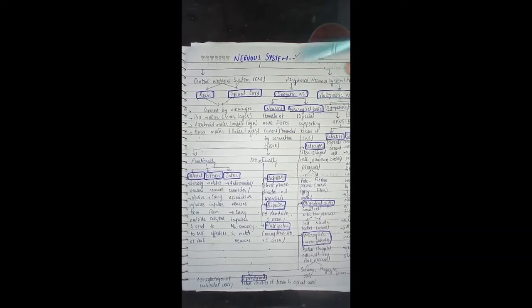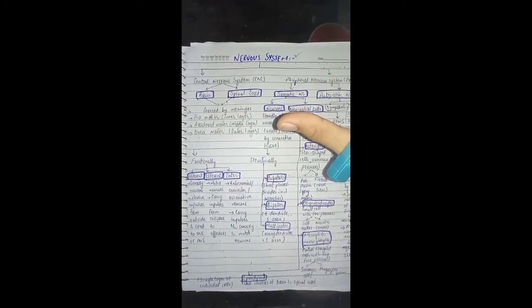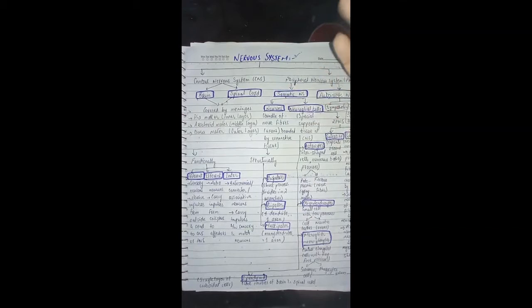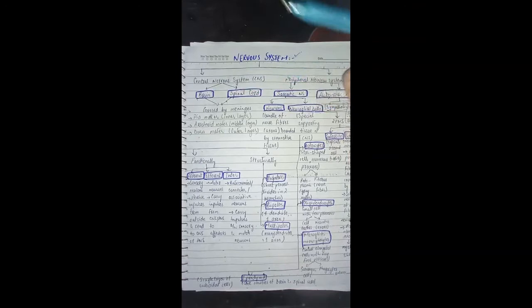The nervous system has basically two classifications: the central nervous system and the peripheral nervous system. The central nervous system appears to be a major coordinator. It has many different parts, and its main functions can be compared to CPU functions — each organ has protection by some means.